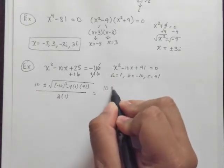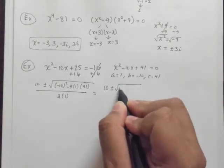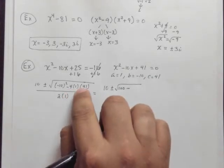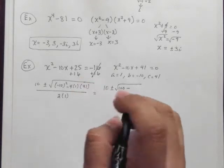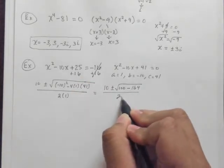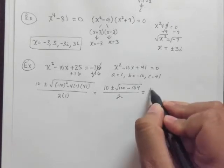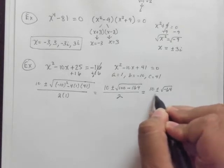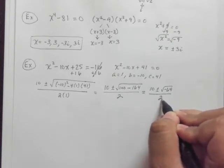we get 10 plus and minus the square root of 100 minus the square root of negative 64, divided by 2. And we get 10 plus and minus the square root of negative 64, divided by 2.